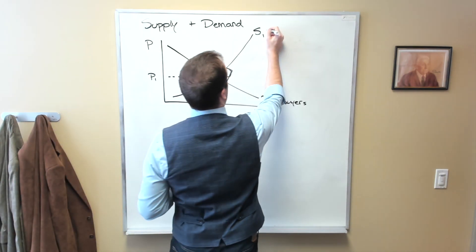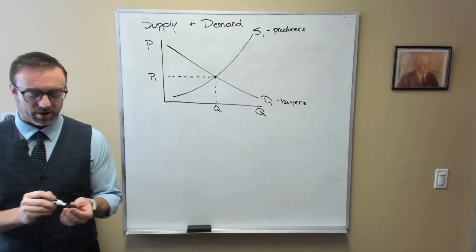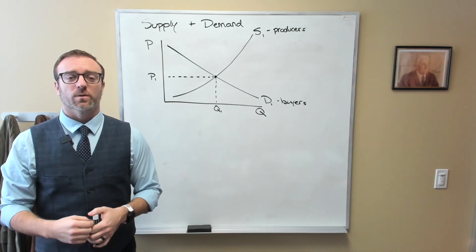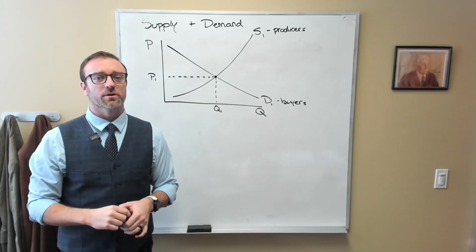And the supply curve would be the producers. These are the people that are selling whatever it is we're talking about. In other words, they're the ones who receive dollars and give up what we could call economic goods.